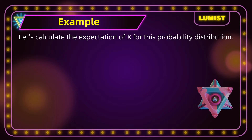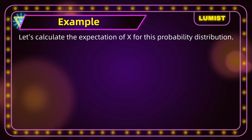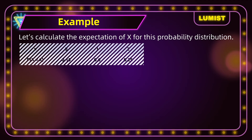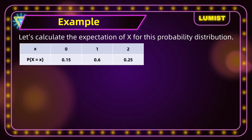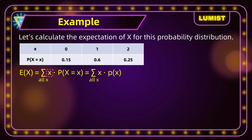Let's take a look at a quick example. We're going to calculate the expectation of x for this probability distribution. We know the formula for expectation of x is the sum of all the possible values x that the probability distribution can take, multiplied by their corresponding probabilities. So all we have to do now is plug and chug.